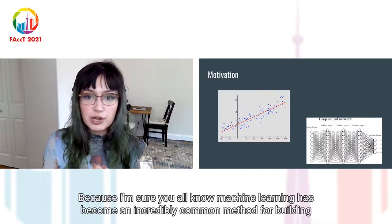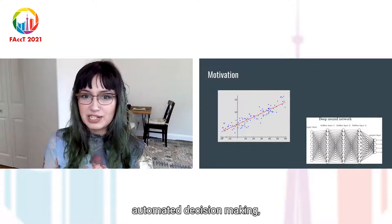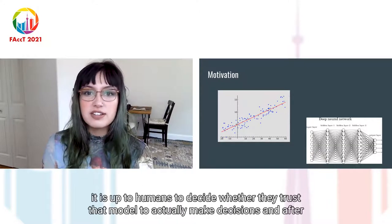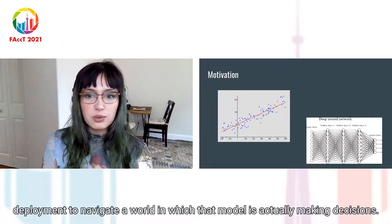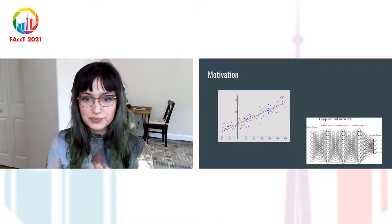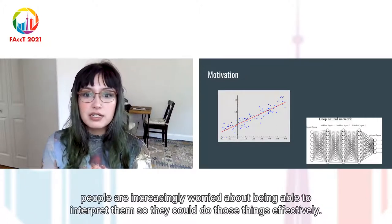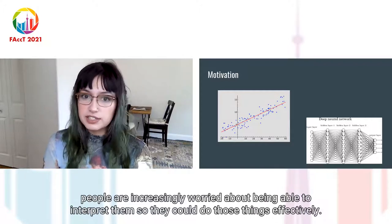As I'm sure you all know, machine learning has become an incredibly common method for building automated decision-making tools in research and industry. Once these models are built, it is up to humans to decide whether they trust that model to actually make decisions, and after deployment to navigate a world in which that model is making decisions. As state-of-the-art models become more complicated, people are increasingly worried about being able to interpret them so they can do those things effectively.